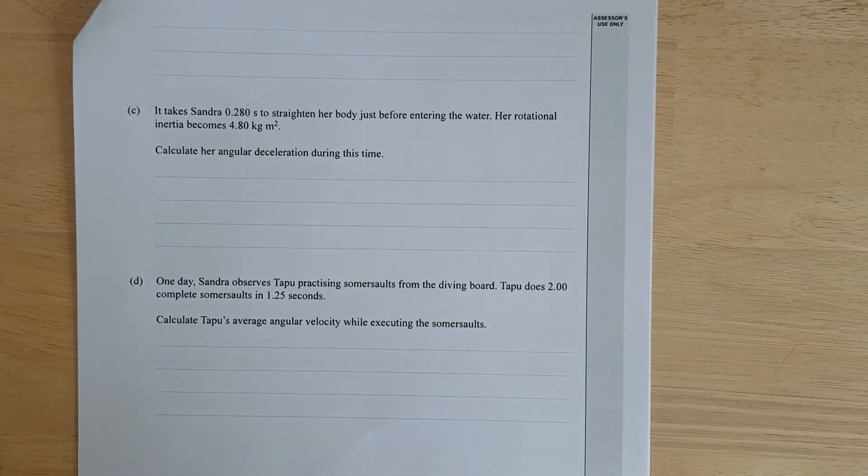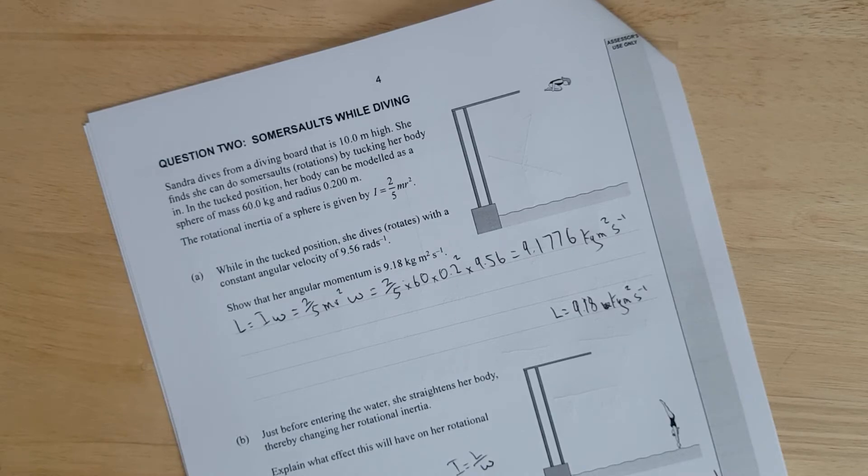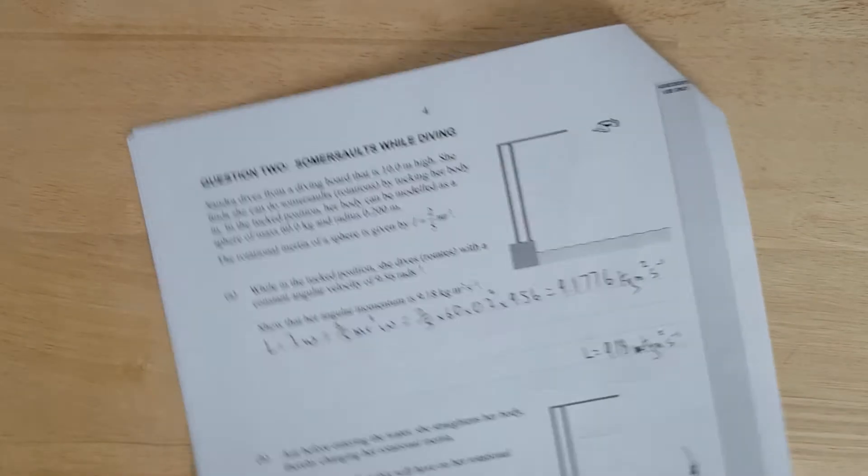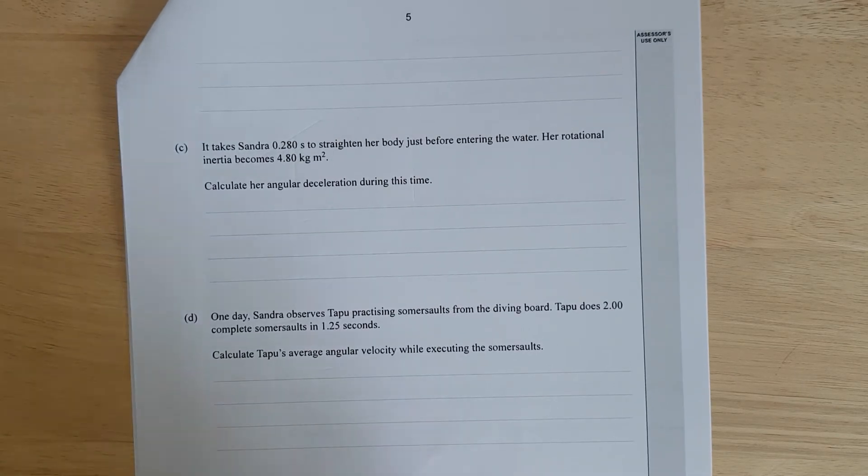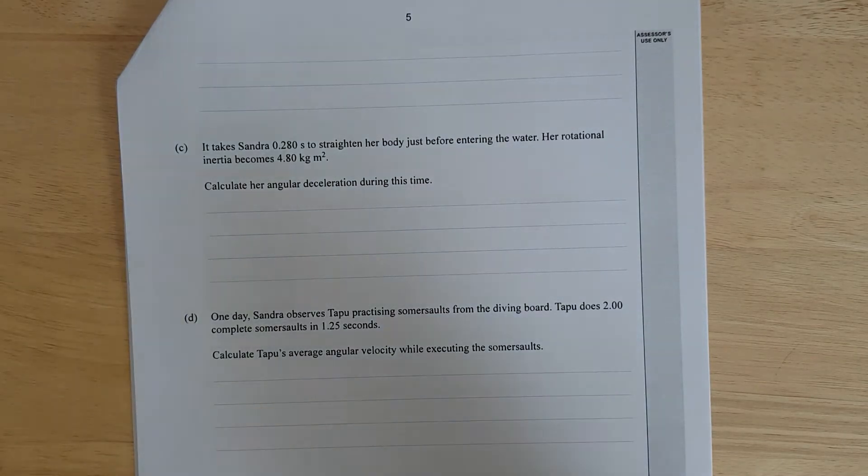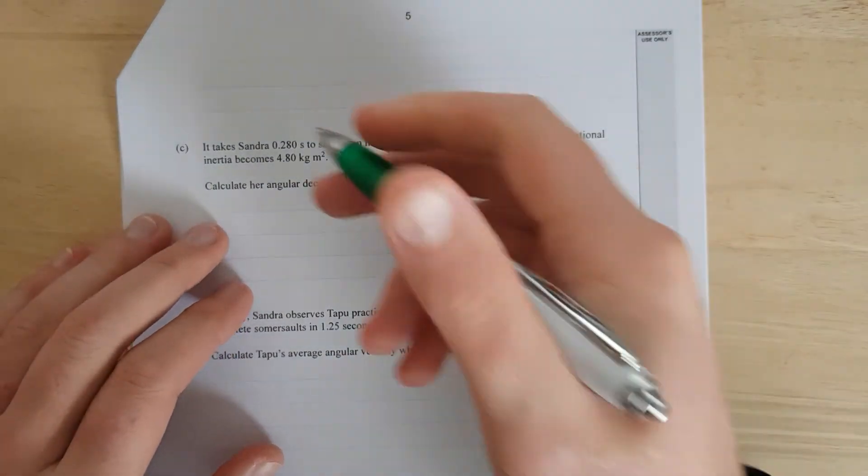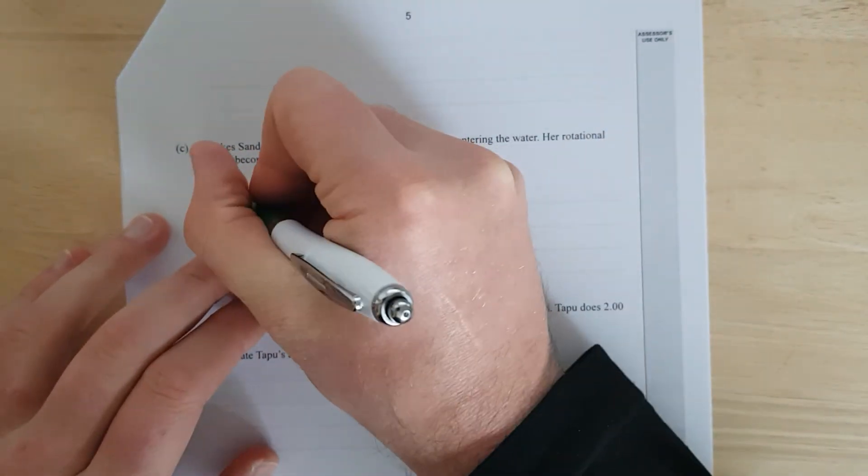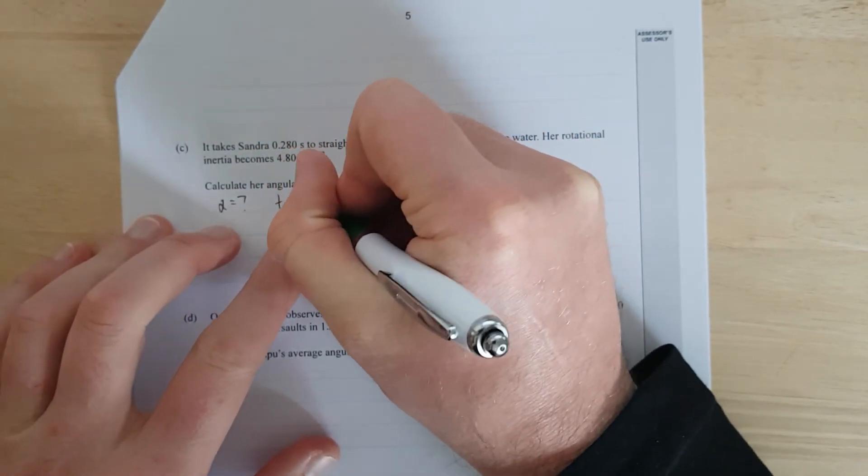Right, if Sandra takes, how long, 0.28 seconds to straighten her body just before the water, her rotational energy becomes 4.8 kg meters per second, calculate her angular deceleration during this time. Do we know, 10 meters high, what do we need to know. Right, so we're trying to find angular deceleration, that equals question mark. We've got time, that equals 0.28.